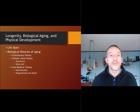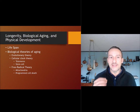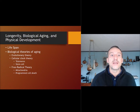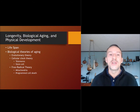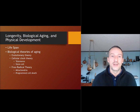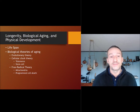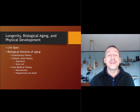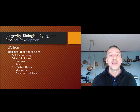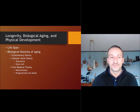Another theory, free radical theory, says people age because when their cells metabolize energy, they produce byproducts. These unstable oxygen molecules are known as free radicals, and they can damage DNA. You will hear about free radicals in cancer a lot. Overeating causes free radicals; calorie restriction and exercise reduce them.